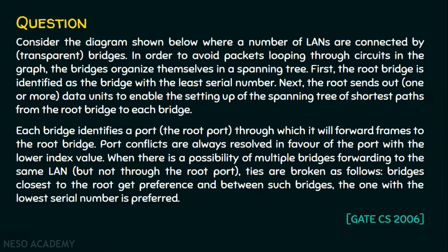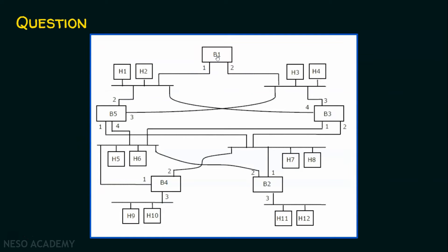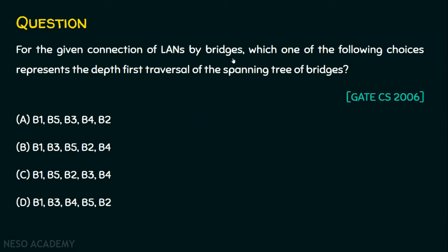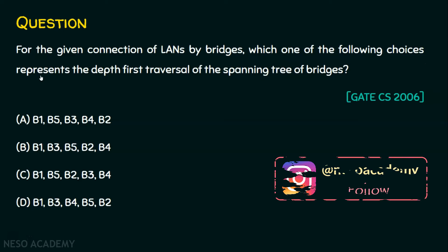This question was asked in GATE Computer Science in the year 2006. In the diagram, B represents the bridges and H represents the hosts. B1, B2, B3, B4, and B5 are interconnected with each other so that there is a loop in the network. There is redundancy in the network, but this loop can take the entire network down. We are required to find, for the given connection of LANs by bridges, which one of the following choices represents the depth first traversal of the spanning tree of bridges.